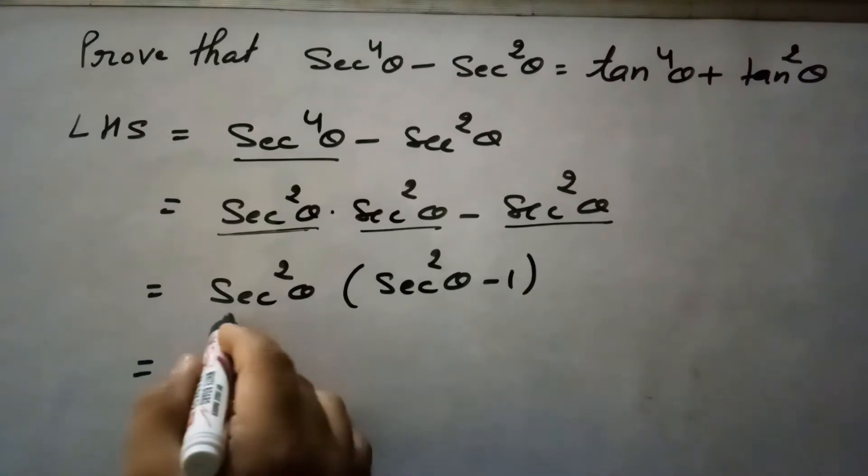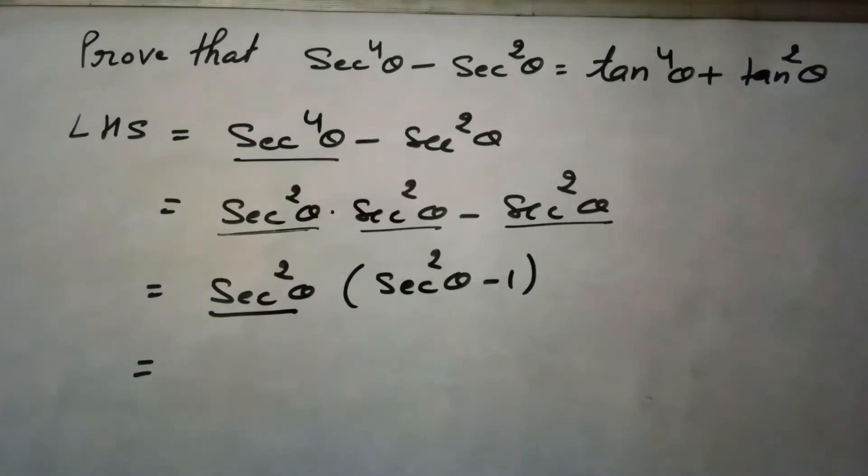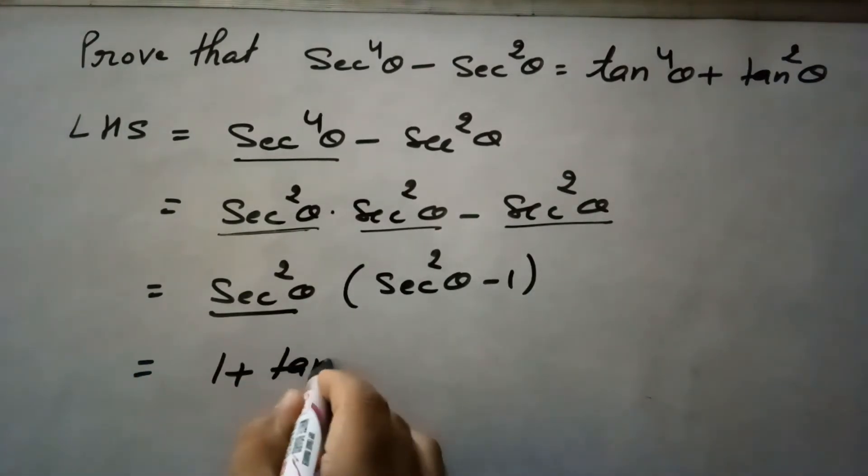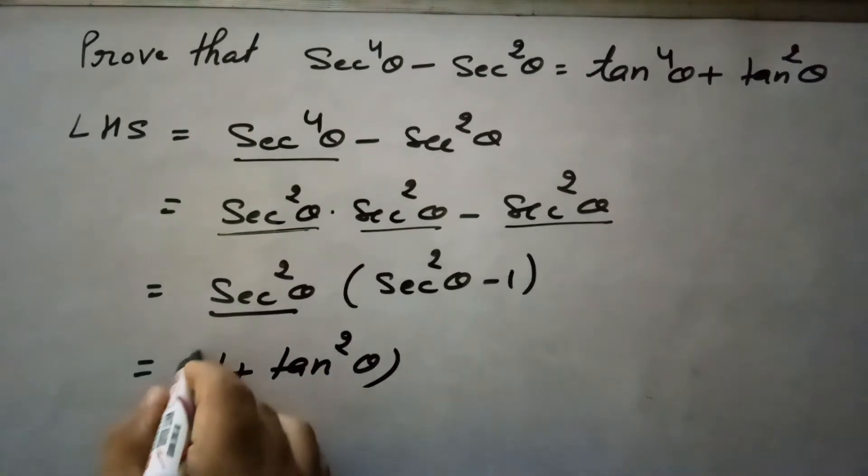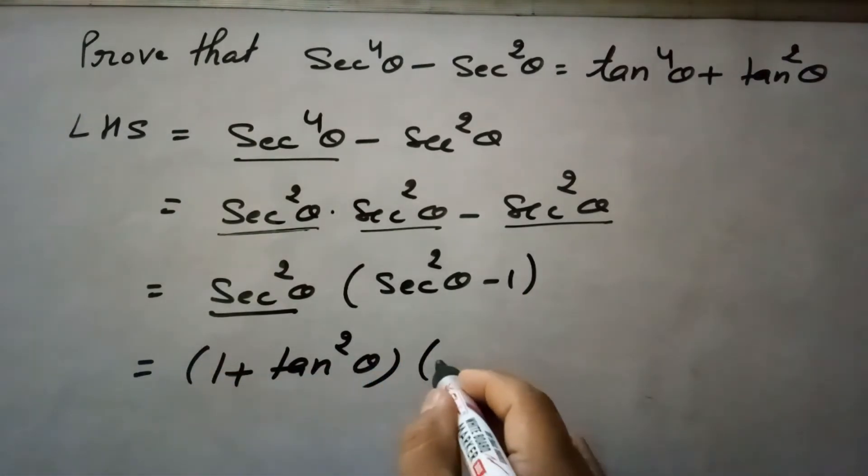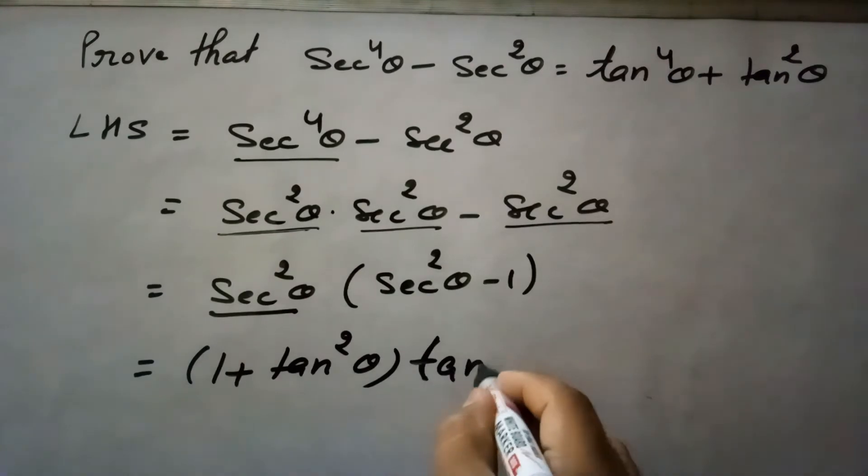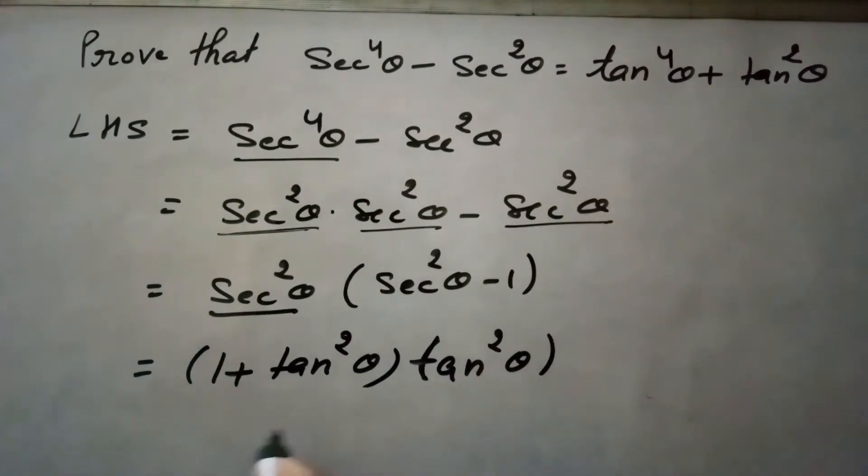So if you see here, we can write secant square theta equals to 1 plus tan square theta. And secant square theta minus 1 is tan square theta. So when you multiply this now,